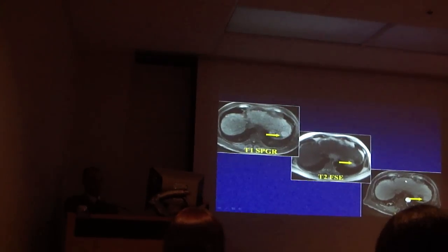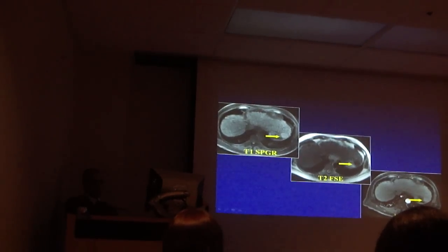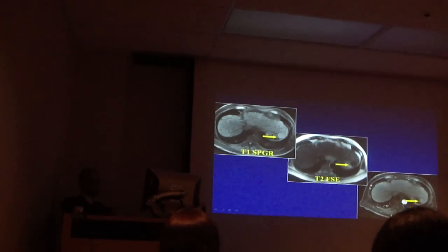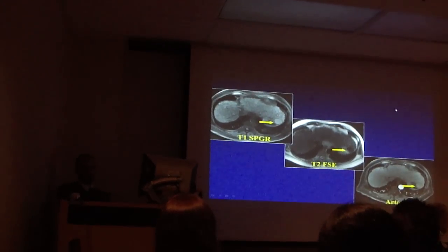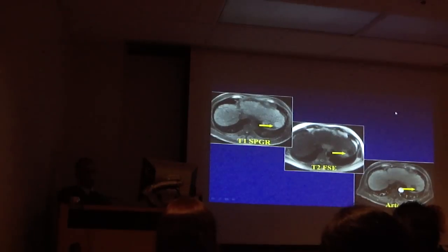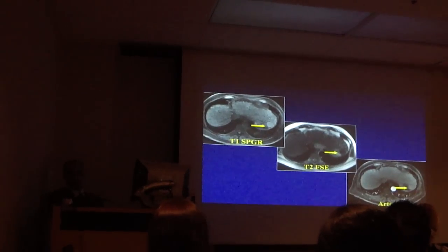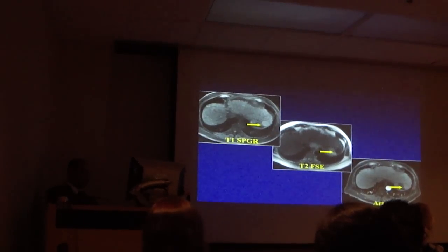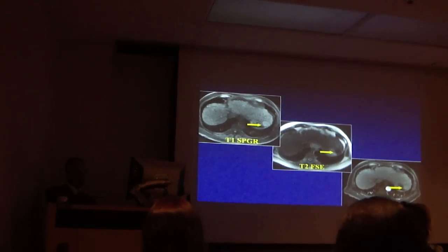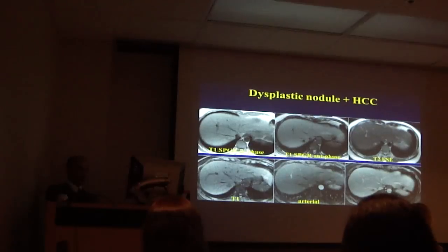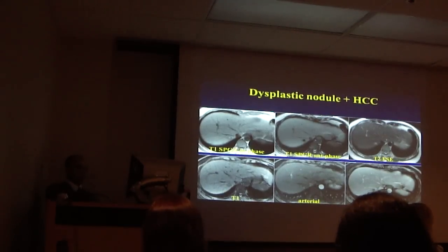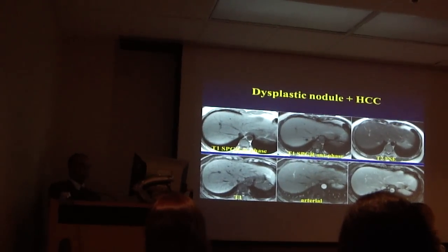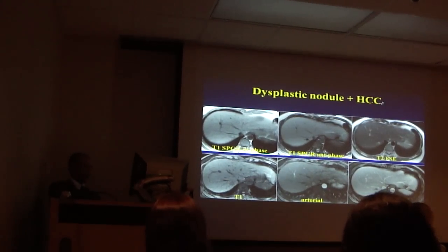On arterial phase, everything becomes iso-intense and does not demonstrate washout. This is, by definition, a regenerative or a dysplastic nodule — this is not an HCC. It does not demonstrate washout. Let's go to what a dysplastic nodule plus an HCC looks like.